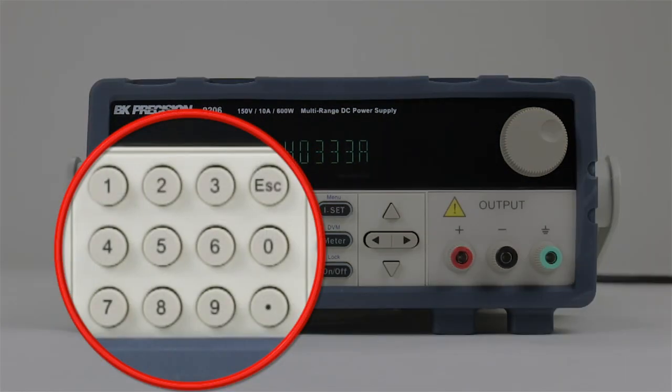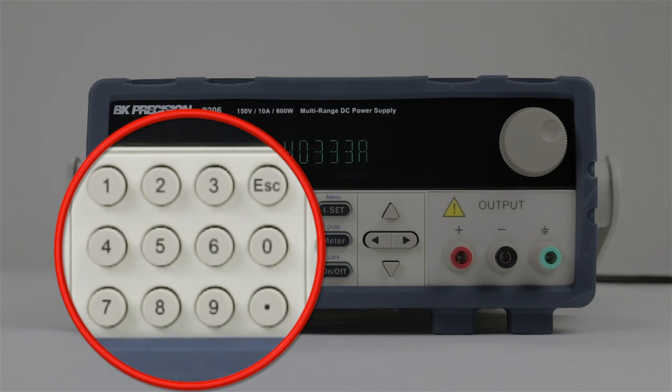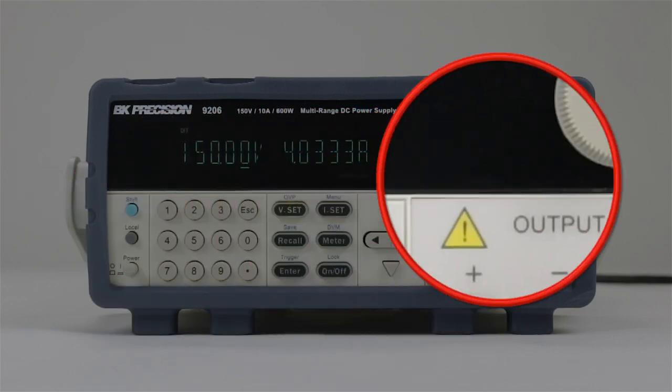Other controls include direct entry keypad, mode selection, and quick adjustments using the arrow key or encoder knob.